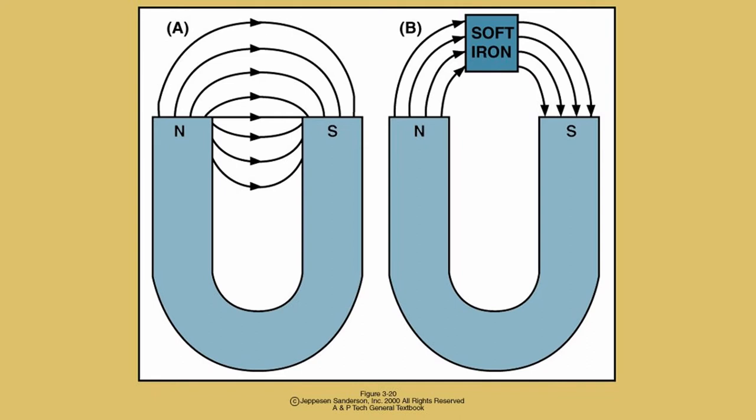In the diagram of a horseshoe magnet on the left, we see lines of flux leaving the north pole of the magnet, traveling through the air and entering back into the south pole. In the magnet on the right, a piece of iron is placed in proximity to the poles of the magnet. This drawing illustrates how the lines of flux more readily travel through the iron than they do through the air.